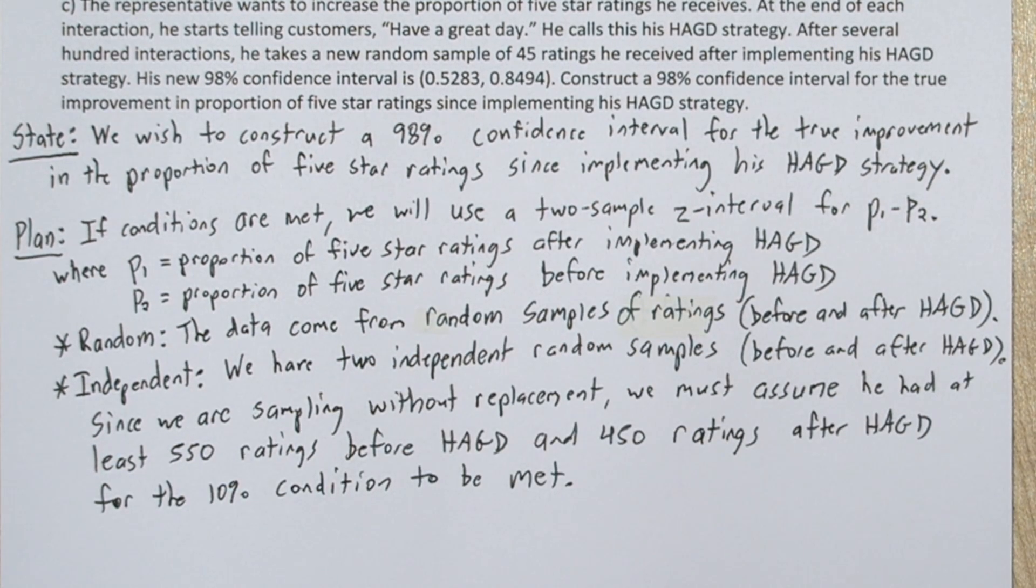Now for the normal condition, we have to check that he had at least 10 five star ratings in each sample, and at least 10 non five star ratings in each sample. So to do this, we have to figure out the point estimate for his post have a great day strategy sample.